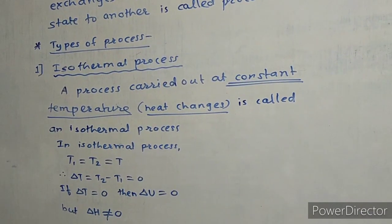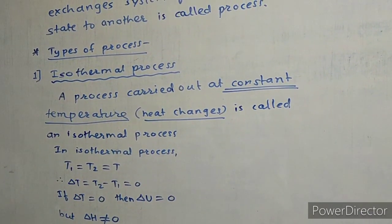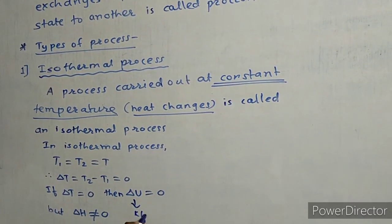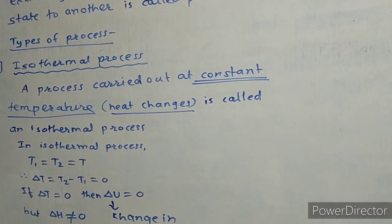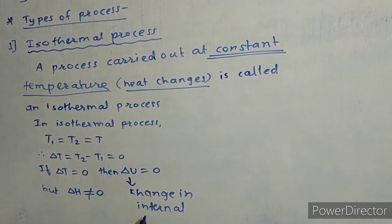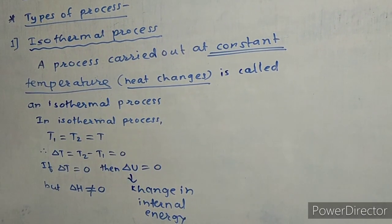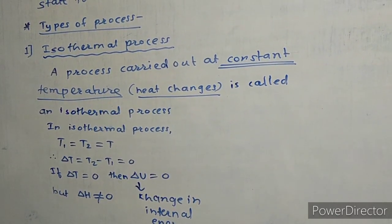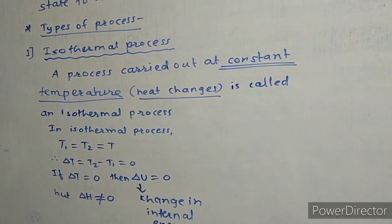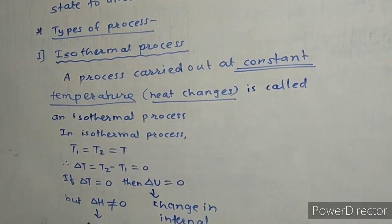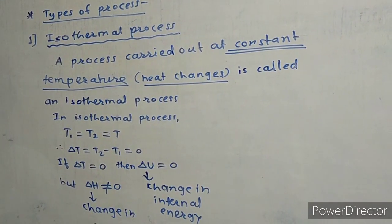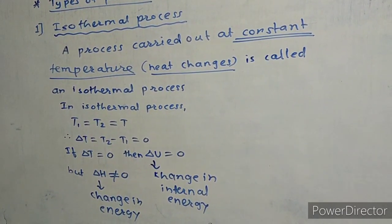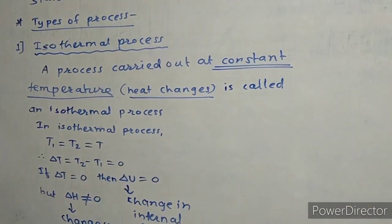In the isothermal process, since delta T equals zero, the change in internal energy delta U also remains constant. However, an important point: in an isothermal process, temperature is constant, which means heat is exchanged. So delta H — the change in heat energy — never remains constant in an isothermal process.